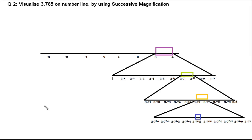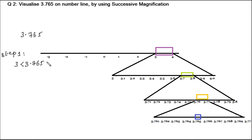Let's look at the second question: locate 3.765 on the number line. To save time I have drawn the number line. In step 1 we draw the number line and represent numbers. From the question we understand the number lies between 3 and 4, so let's focus on the portion between 3 and 4.